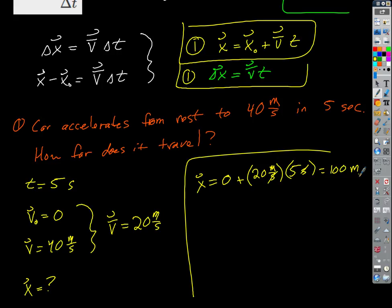Let's review sig figs. How many sig figs are in time? Two. How many in velocity? Assuming the zero is measured, two. V-bar is 20, and that initial zero at rest is infinitely many sig figs if we want. So we have two sig figs, and when we do our calculation we keep the full 100 meters.